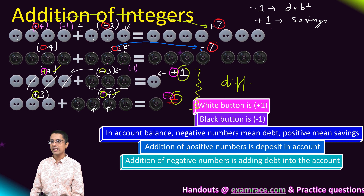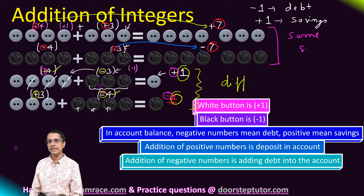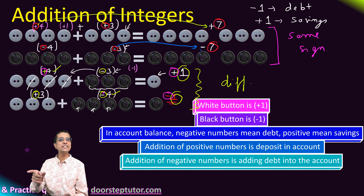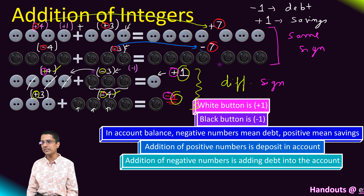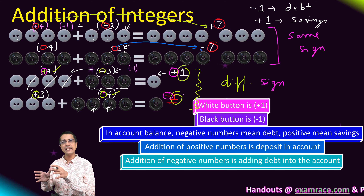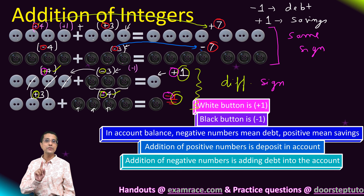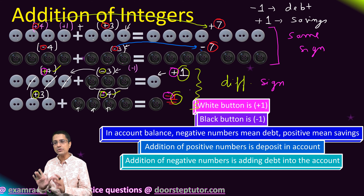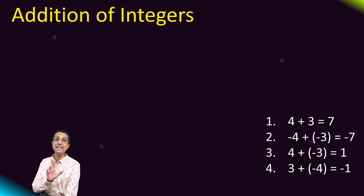To summarize the rules: if the operands are of the same sign, add the two operands and use that sign in the final answer. If the operands are of different signs, take the difference of the operands and use the sign of the larger magnitude operand in the answer.